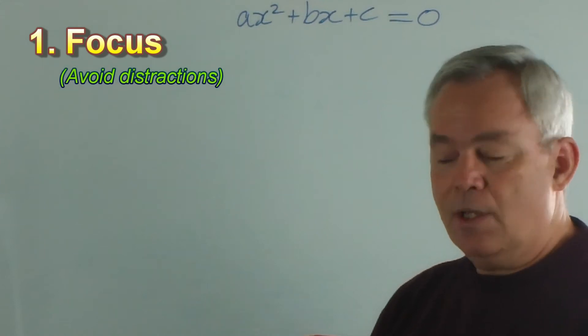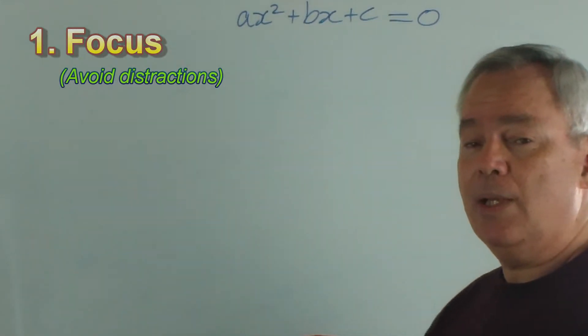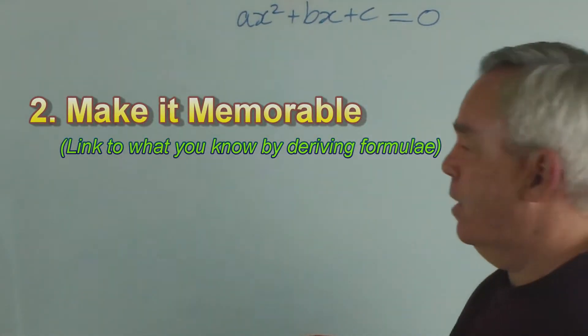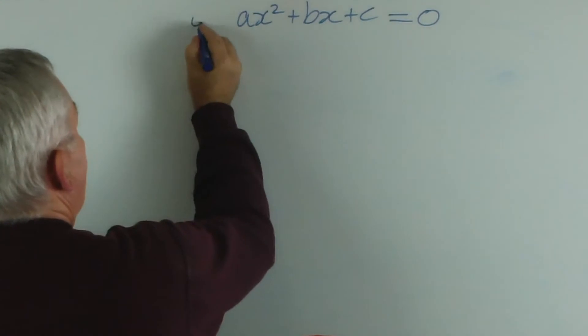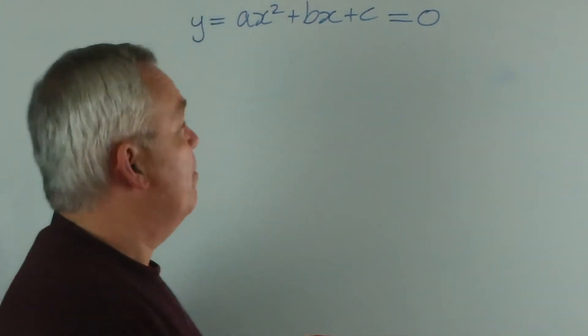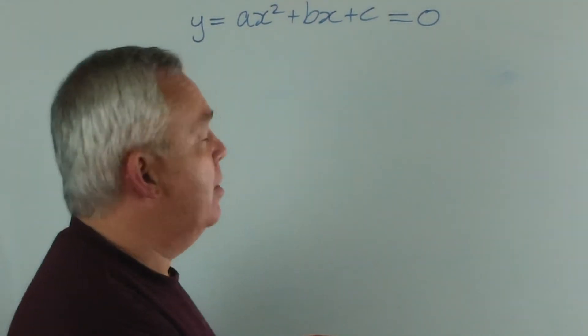Remember that step number one was to set time aside to actually be focused and deliberate about your learning. Remove distractions, find a clean sheet of paper, set five or ten minutes aside in a quiet place and write this at the top of the page. Now of course, the quadratic equation is y equals ax squared plus bx plus c for any quadratic equation or any parabola that we're drawing.